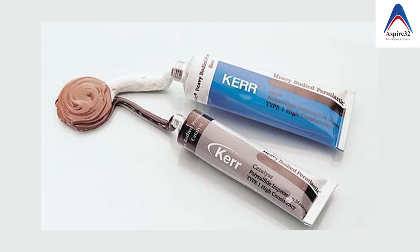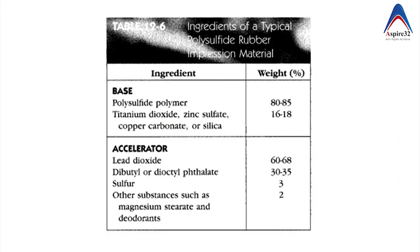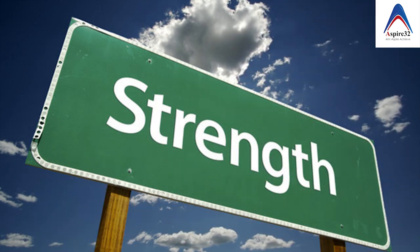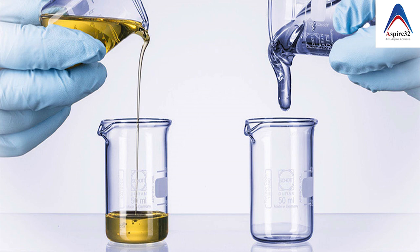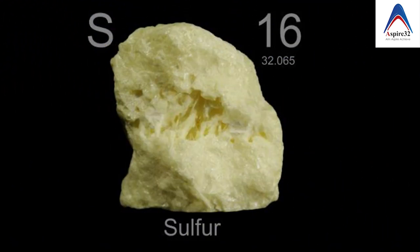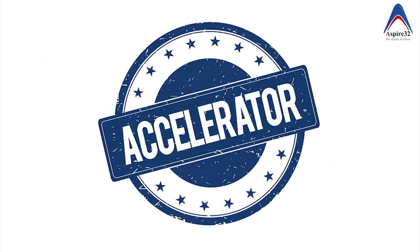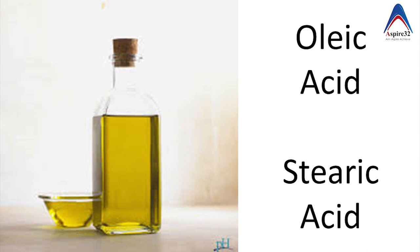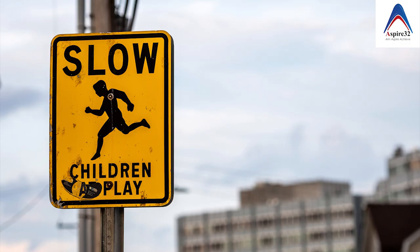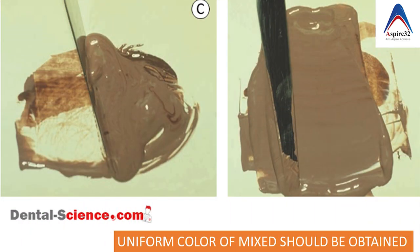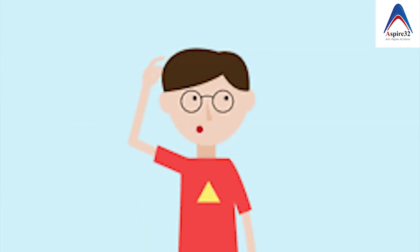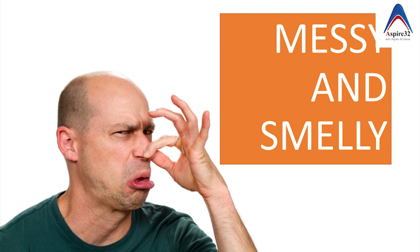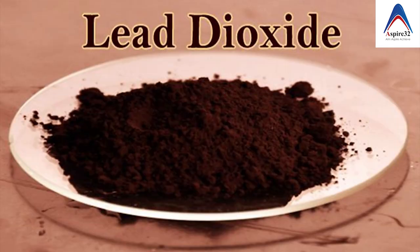Apart from the main components, the two-paste system has various other components. The role of filler is to increase strength, while dibutylphthalate acts as a viscosity modifier. A very small quantity of sulfur is also added, which acts as an accelerator. The catalyst paste has additional components like oleic acid and stearic acid, which control the reaction as retarders. Mixing is simple: take equal lengths of base and catalyst paste and mix them similarly to zinc oxide eugenol paste until you get a uniform color, which gives good properties to the impression. The main issue with this material was that it was messy and smelly because of the lead dioxide, which also permanently stained clothes.